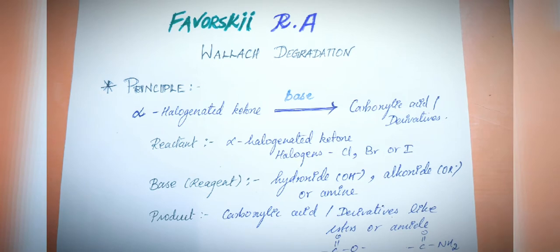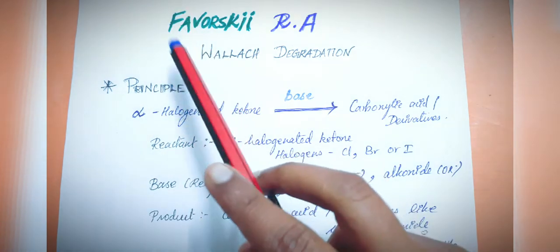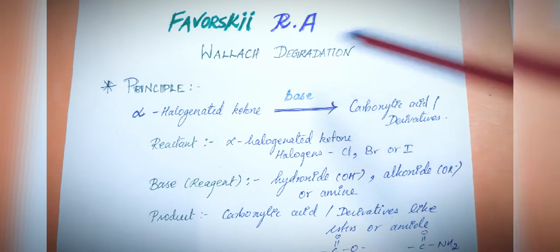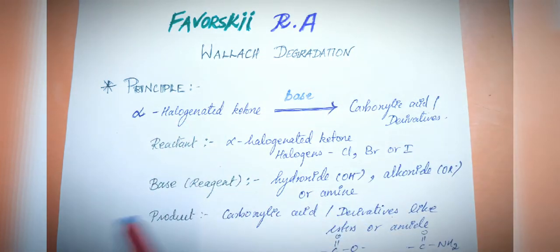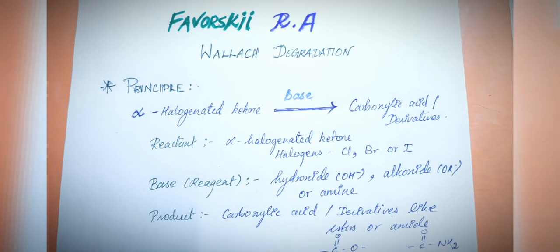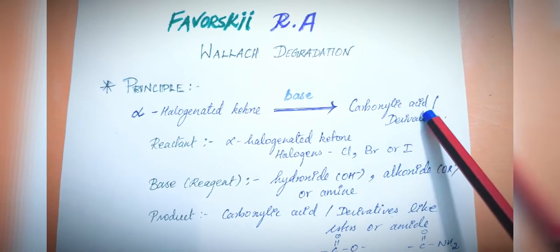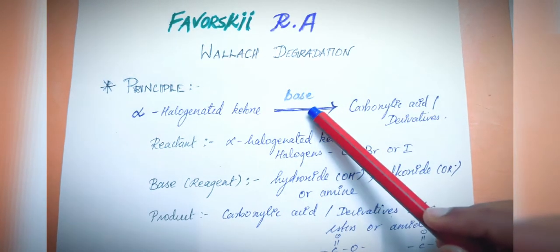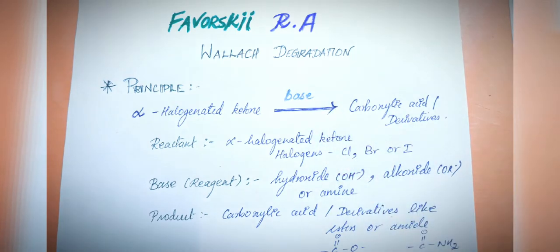Hello everyone, welcome back to my channel. Today in this video let's look at the Favorsky rearrangement and discuss it in detail. Let's quickly look at the principle: only an alpha halogenated ketone can undergo a Favorsky rearrangement to give a carboxylic acid or a derivative of carboxylic acid in the presence of a base.